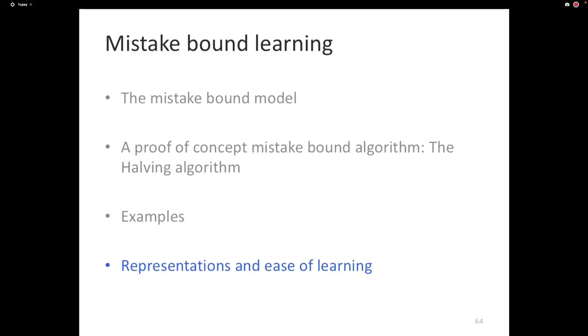The mistake-bound model for learning says a concept class is learnable under the mistake-bound model if the number of mistakes made for the worst possible sequence of examples for the most difficult concept in the concept class is still polynomial in the number of features. And then I showed that this is not a trivial set. The set of mistake-bound algorithms contains some examples. In particular, I introduced this algorithm called the halving algorithm.